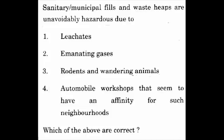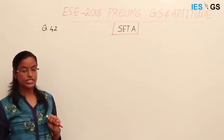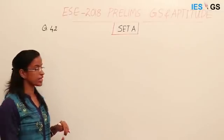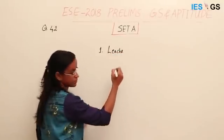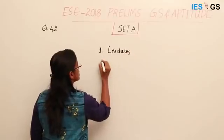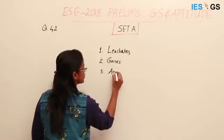Question 42: Sanitary or municipal landfills and waste heaps are unavoidably hazardous due to — First, leachate; Second, emanating gas; Third, rodents and wandering animals; Fourth, automobile workshops that seem to have an affinity for such neighborhoods. Which of the above are correct? We are given four statements: one about leachate, second about gas emissions, third about animals and rodents, fourth about workshops.